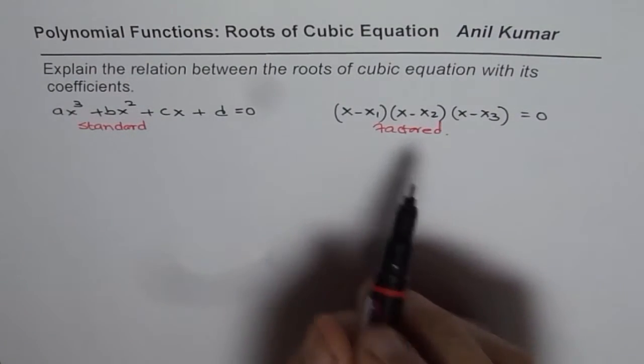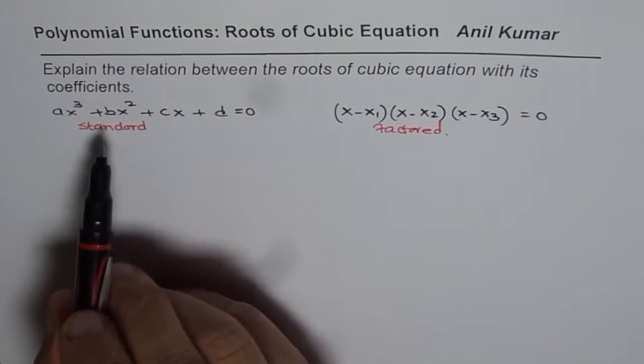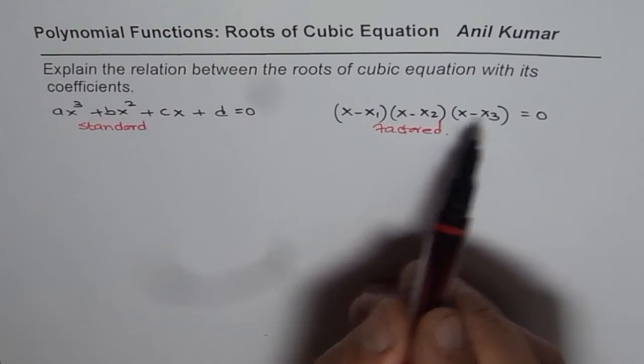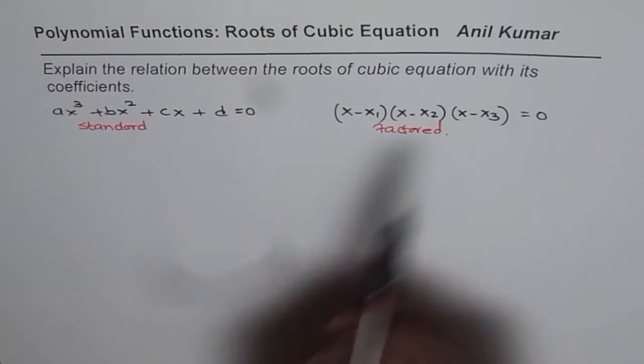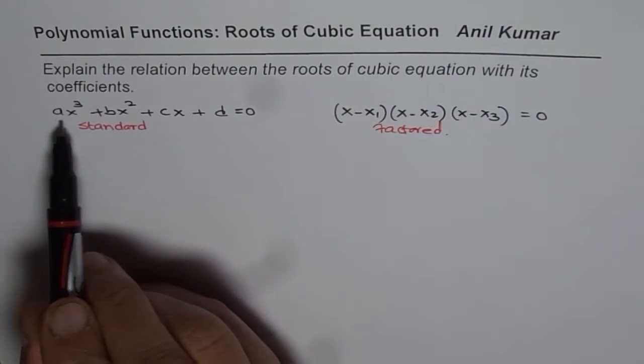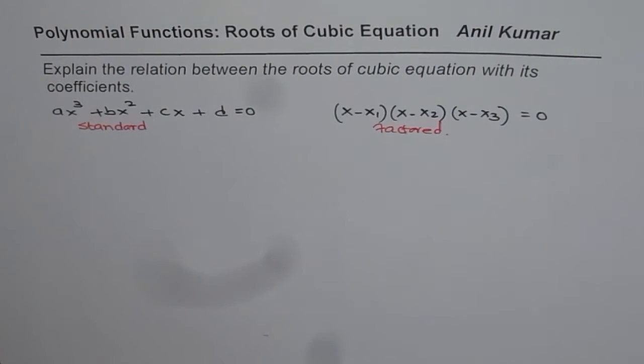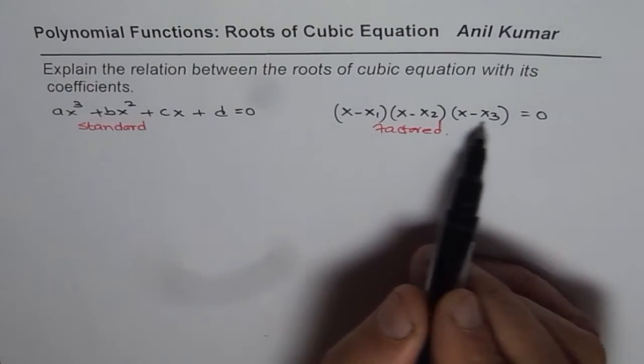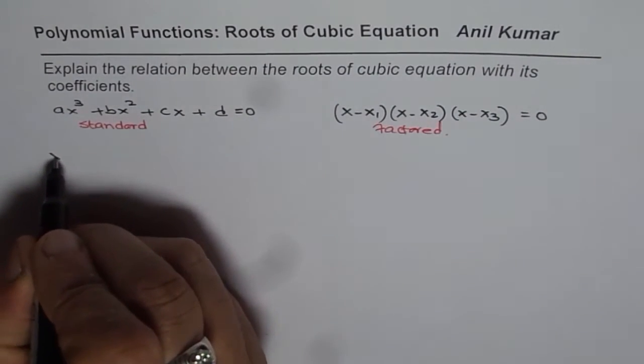Now what are we going to investigate? We are going to investigate the relationship between x₁, x₂, x₃, the three possible roots with coefficients a, b, c, and d. So that is what we are going to investigate in this particular video. So let us actually expand the factored form and see what do we get.